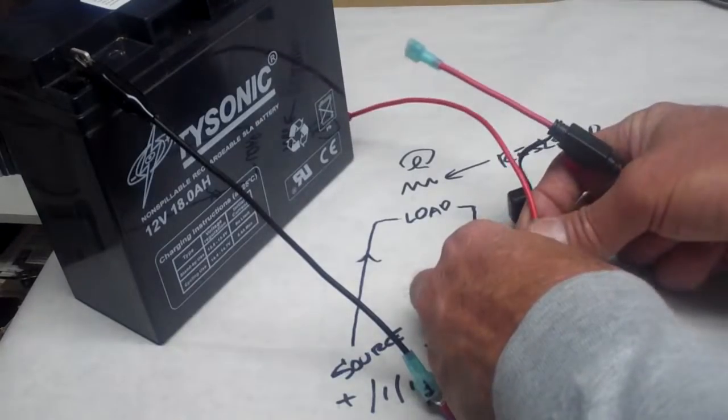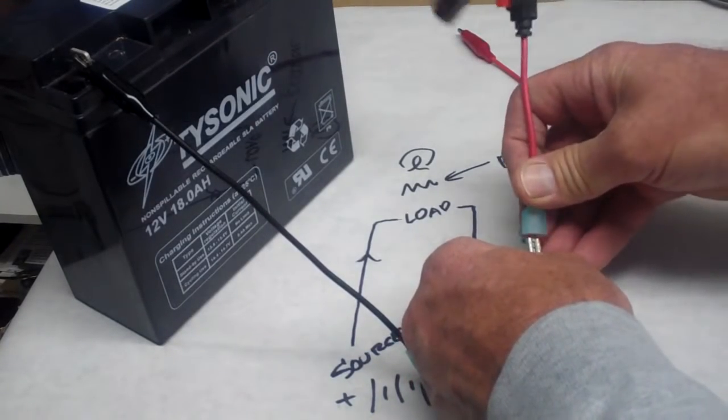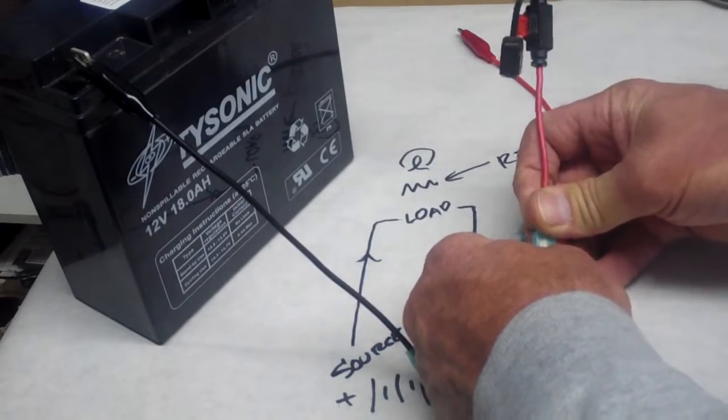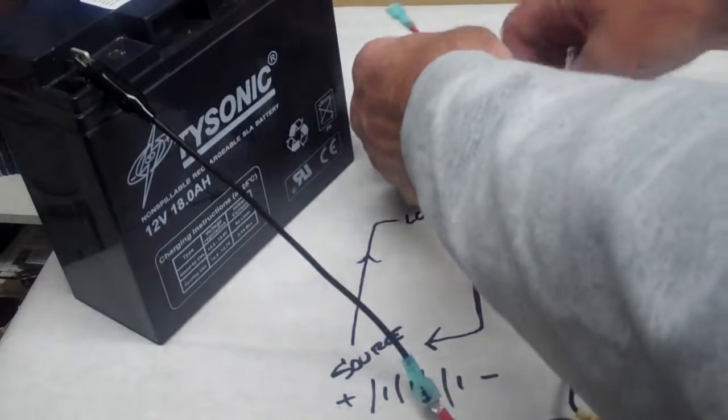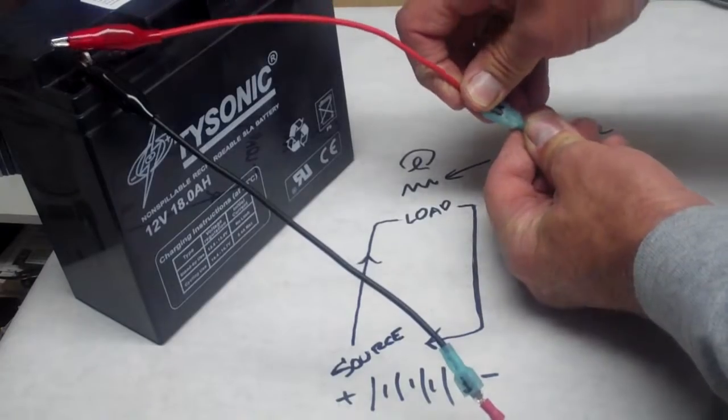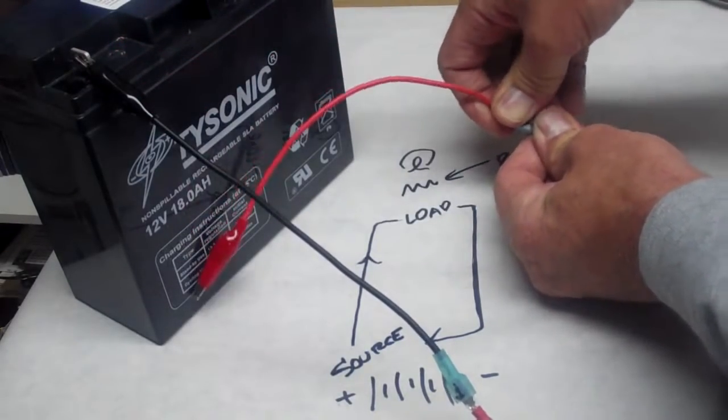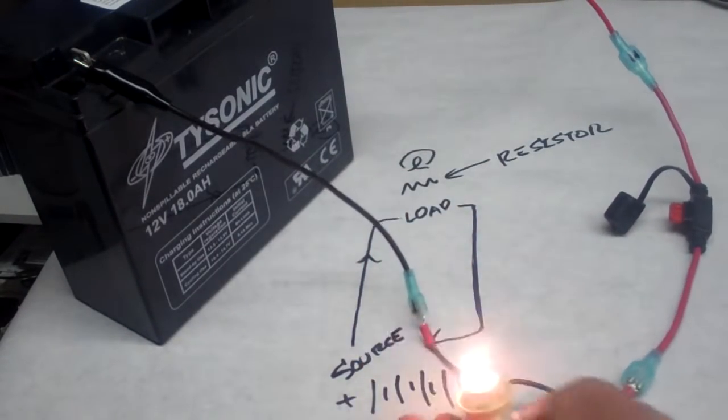So I'm going to disconnect my source, disconnect my load, plug this wire in that has the fuse in it. I'm going to plug this back into the fuse up here on this end and plug it back in and the load still operates. But now we have this second component.